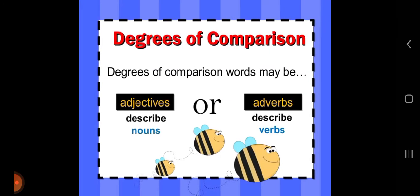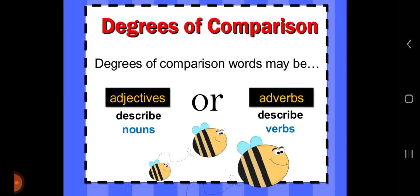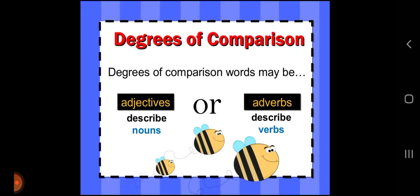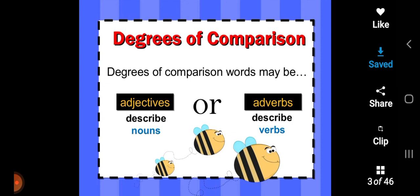Degrees of comparison words may be adjectives — adjectives describe nouns — or they may be adverbs. Adverbs are words that describe verbs.